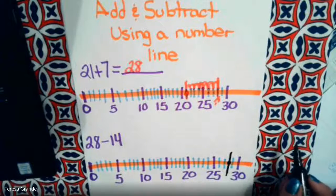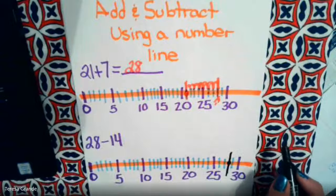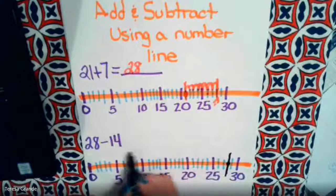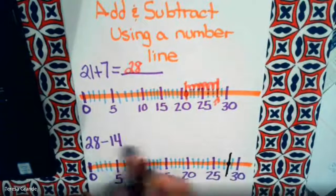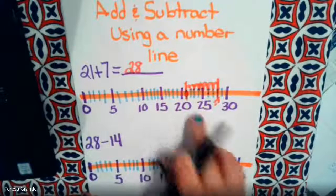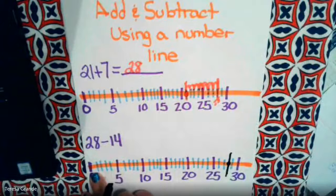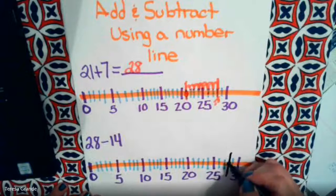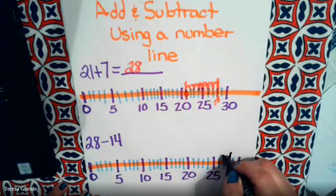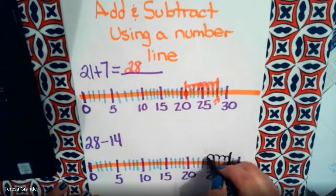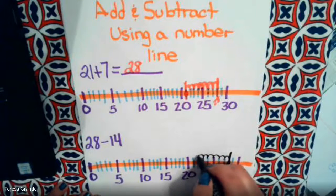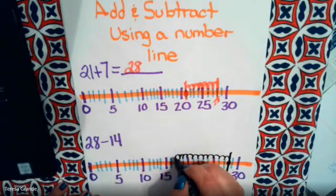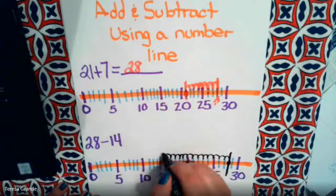Now we need to subtract 14. When we subtract, we move to the left. We're moving down the number line, it's going to get smaller. So we need to go 14 spaces: 1, 2, 3, 4, 5, 6, 7, 8, 9, 10, 11, 12, 13, 14.